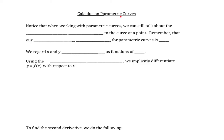Let's talk about calculus on parametric curves. Notice that when we're working with parametric curves, we can still talk about the tangent line to the curve at a point. Remember that our independent variable for our parametric curve is actually the variable t. So both x and y are coordinates of functions of t. In other words, x and y are dependent variables that depend on what t is, and we call those guys coordinate functions.